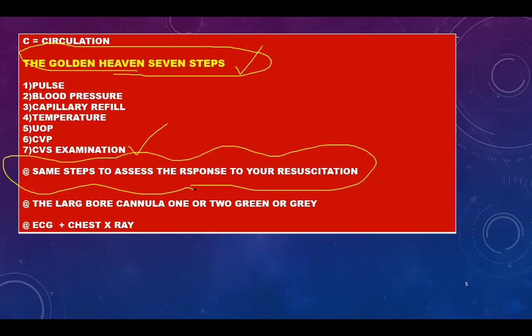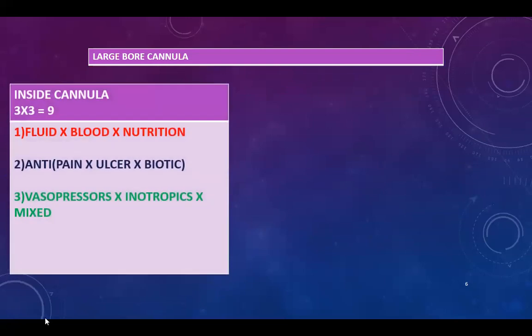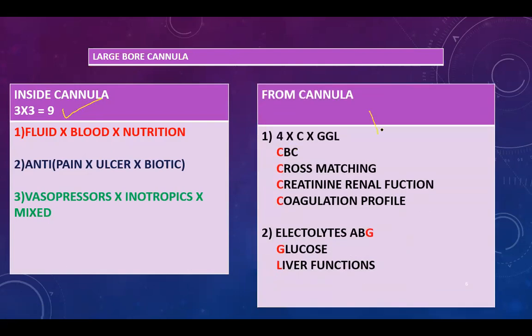Now you have done the resuscitation — how do you assess the response? You will use the same steps. In CRESP, one large-bore cannula is enough, but in ATLS two is a must. You must perform an ECG and chest X-ray in these steps. Once you insert the large-bore cannula, you will implement the '3 multiplied by 3' and obtain the '4 C's multiplied by WGL.'